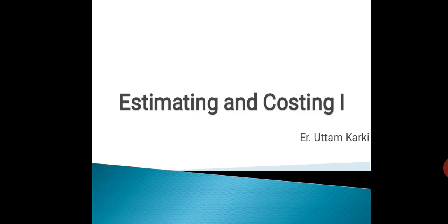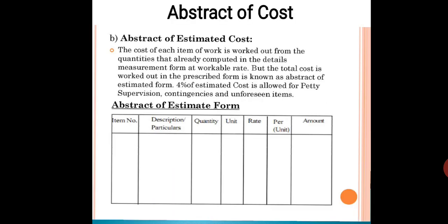Topics include bill of quantity, contract management, and abstract of cost. Abstract of cost means the cost of each item of work is worked out from the quantities already computed in the details measurement form at workable rates. The total cost worked out in the prescribed form is known as abstract of estimated form. 4% of estimated cost is allowed for petty supervision, contingency, and unforeseen items.